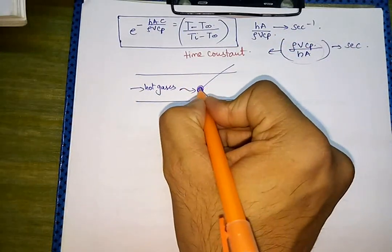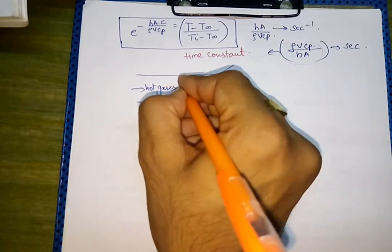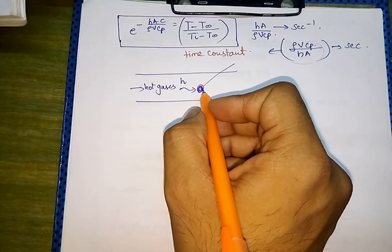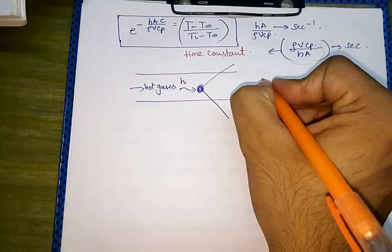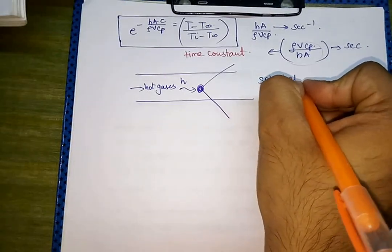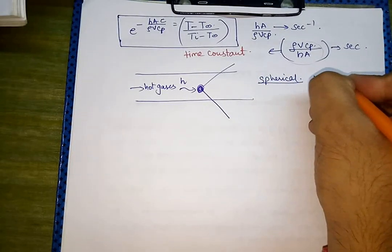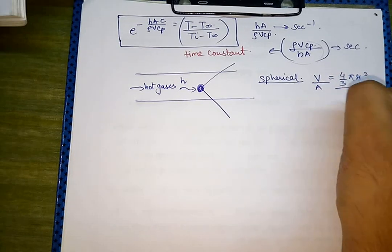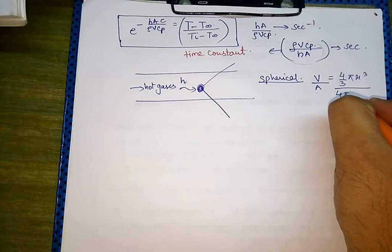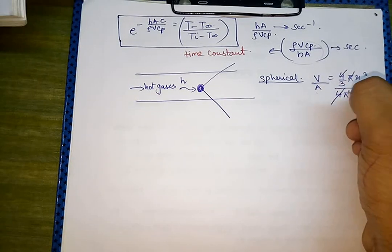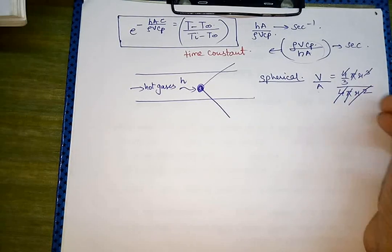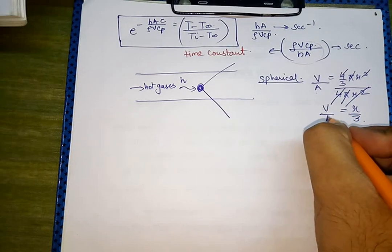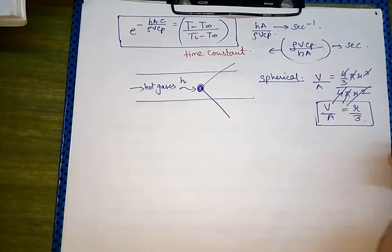Heat transfer occurs by means of convection. For a sphere, volume is (4/3)πr³ and area is 4πr², so V/A = r/3. Please remember: the V/A value for a sphere is r/3.